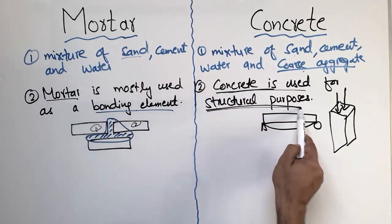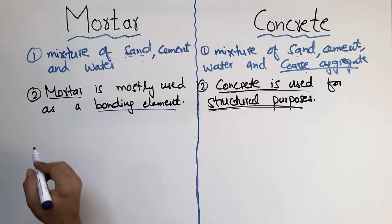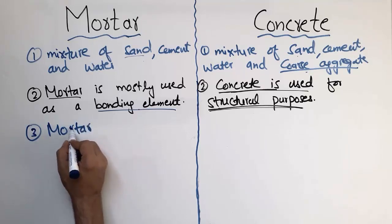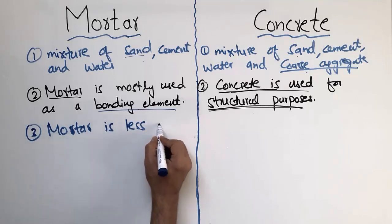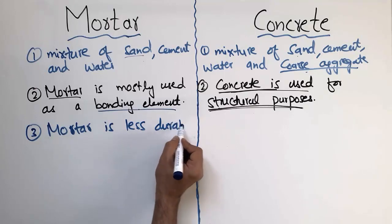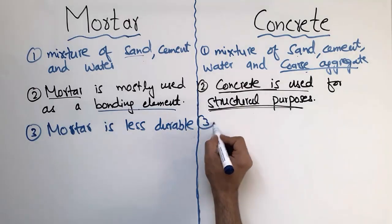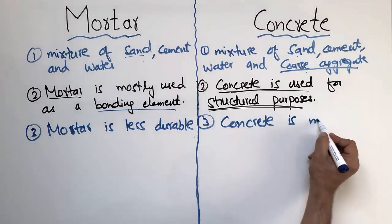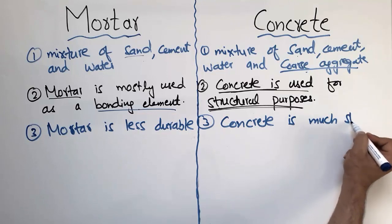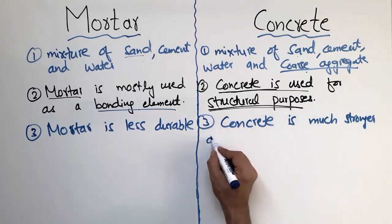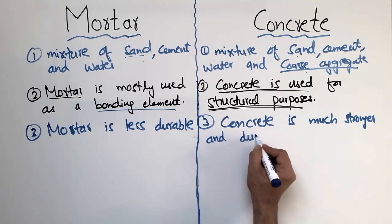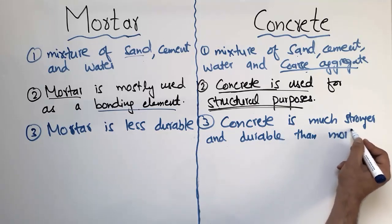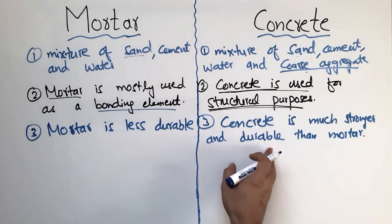The third difference is durability. Mortar is less durable than concrete. Concrete is much stronger and more durable than mortar, meaning the lifespan of concrete is higher than that of mortar.